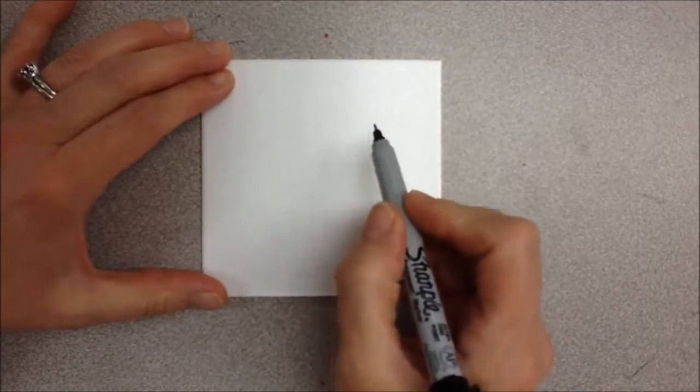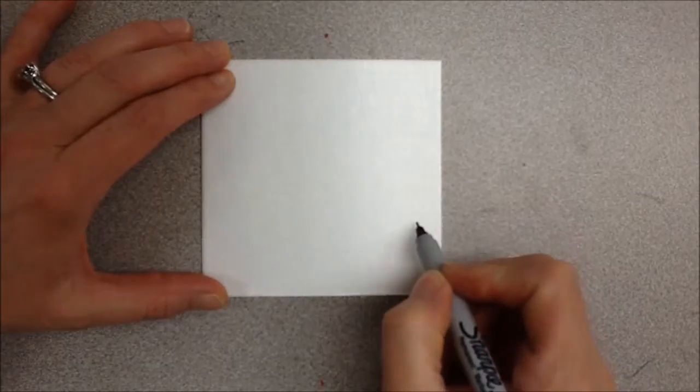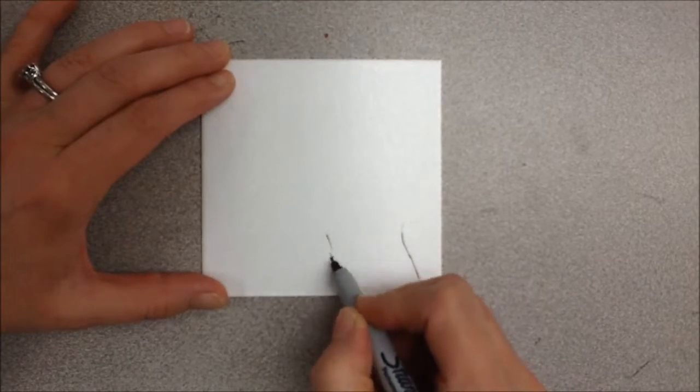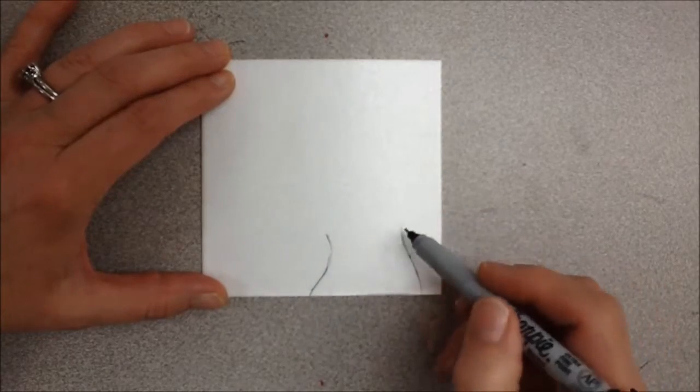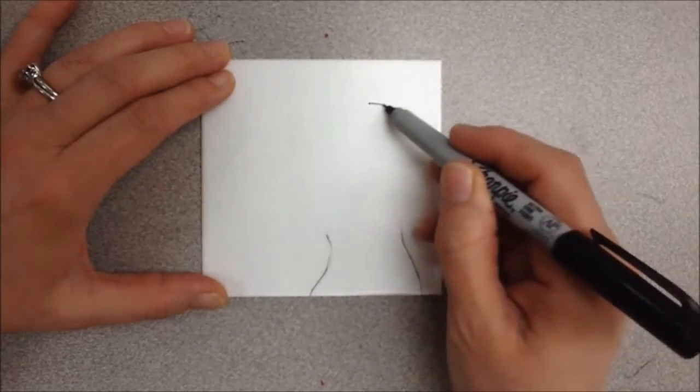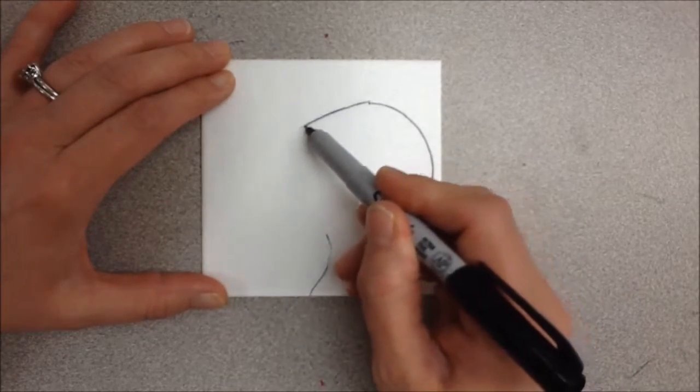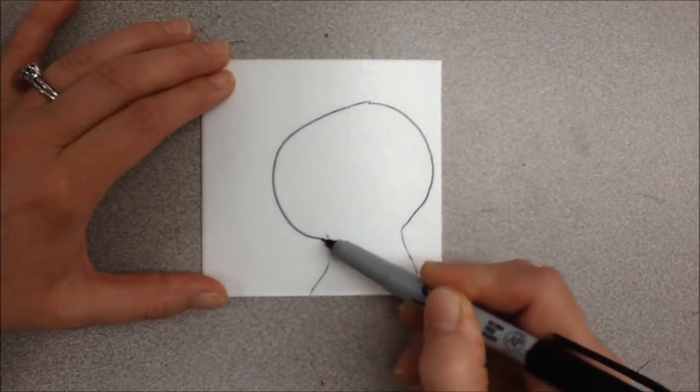So I always like to start out by very gently with that pencil sketching the idea that I had for my cat on the foam. That way I can change things a little bit if I need to. But I don't expect at this point to have to change things very much because I've been practicing my cat.